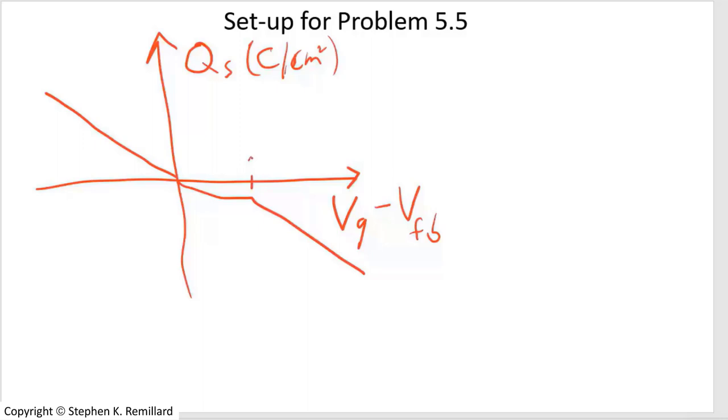First of all, I just identified for you that right there, the origin is flatband. When V gate minus V flatband is negative, you are in accumulation. When you go through flatband, you enter into depletion. At one volt, it stops being curved and leveling off and starts going linearly again. That is where you have your inversion. So the one volt point is the threshold voltage in this problem.